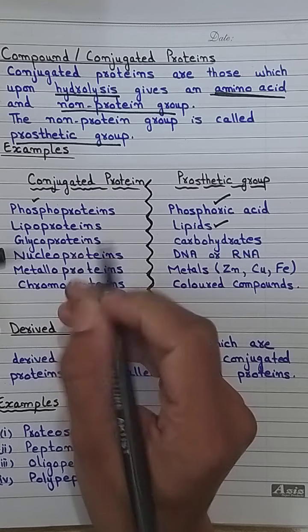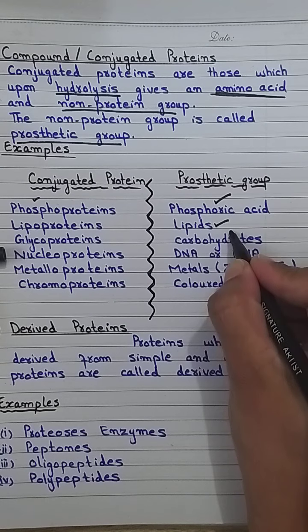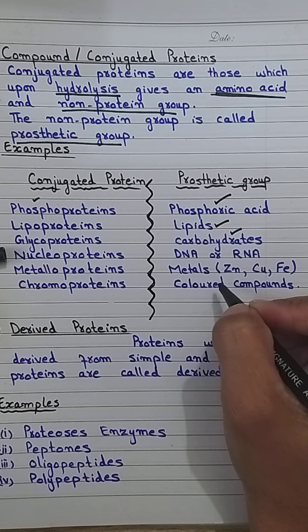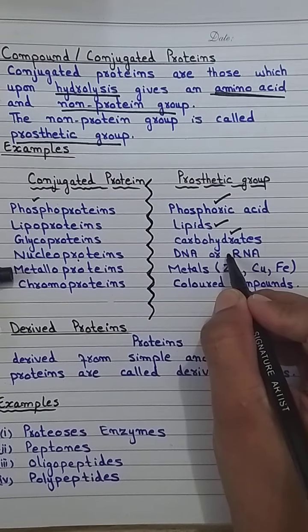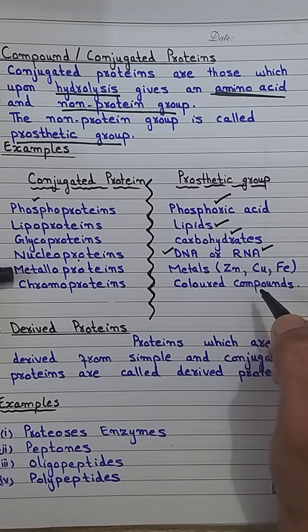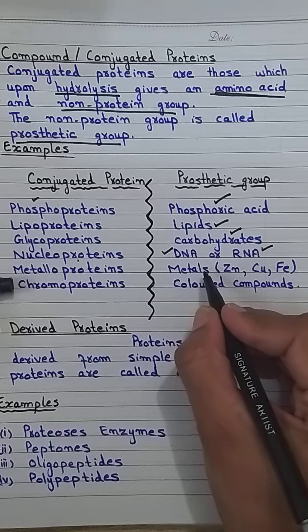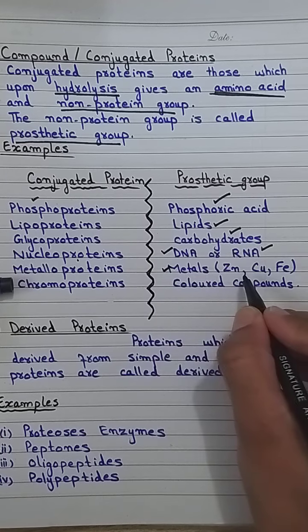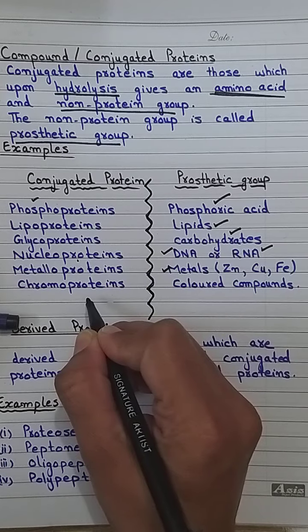Glycoproteins: amino acids plus a non-protein prosthetic group which is carbohydrate. Nucleoproteins: amino acids plus non-protein group which is DNA and RNA — deoxyribonucleic acid and ribonucleic acid. Metalloproteins: amino acids plus non-protein group which is metals such as zinc, copper, and iron. Chromoproteins: amino acids plus a non-protein prosthetic group which is any colored compound — a color-giving group, as indicated by the word 'chromo.'